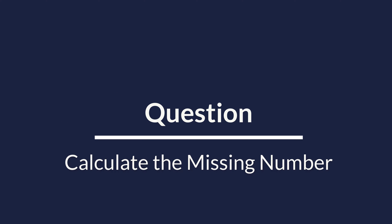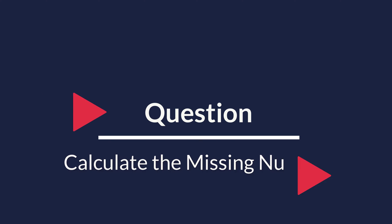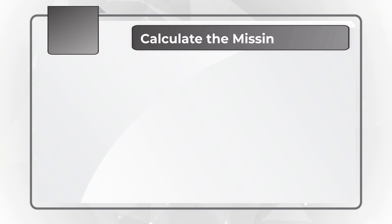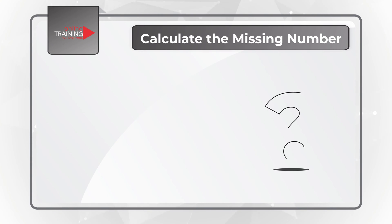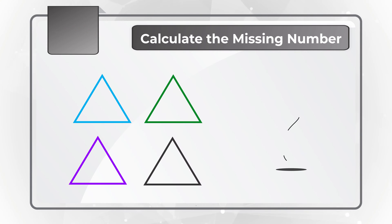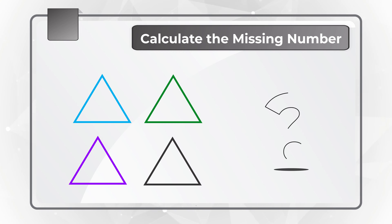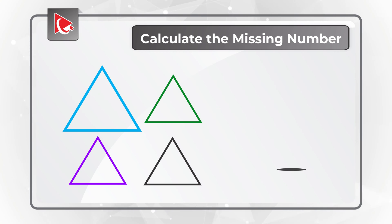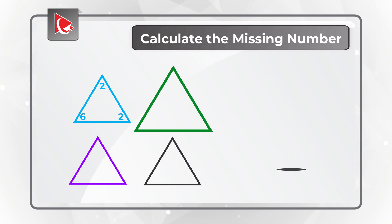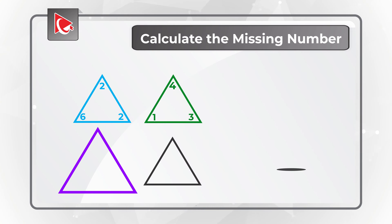Here is the famous four-triangle question you regularly observe in the test. First, you need to calculate the missing number, which is represented by the question mark. You are presented with four different triangles, each of a different color. The first, bottom left corner blue triangle, has numbers in the corners 2, 2, and 6. The green triangle in the upper right corner has numbers 4, 3, and 1. The purple triangle in the bottom left corner has numbers 3, 5, and 2.